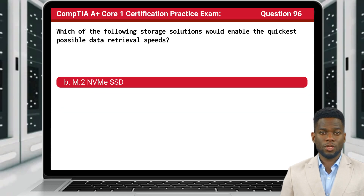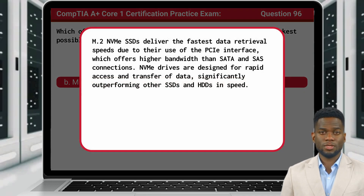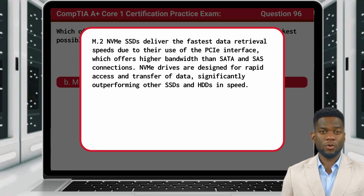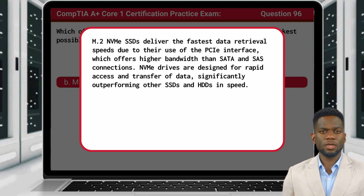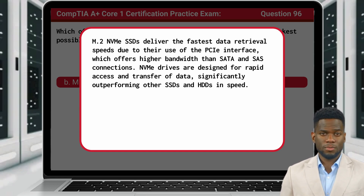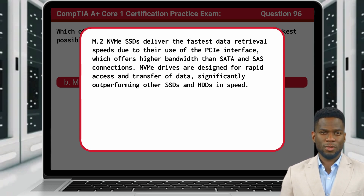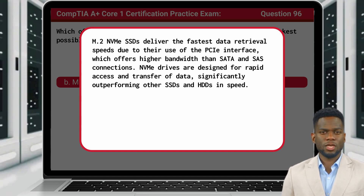The answer is B. M.2 NVMe SSD. M.2 NVMe SSDs deliver the fastest data retrieval speeds due to their use of the PCI-E interface, which offers higher bandwidth than SATA and SAS connections. M.2 NVMe drives are designed for rapid access and transfer of data, significantly outperforming other SSDs and HDDs in speed.